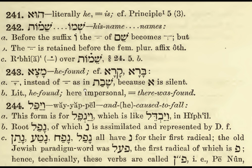Matza — 'he found.' Here we have Ah instead of Ah, as in Shabbat, because the Aleph is silent. Matza literally means 'he found,' but here it's impersonal: 'there was found.' Vayyappel — 'and he caused to fall.' This form stands for Vayyannappel, with an assimilation going on — just like Vayyappel in Hifil. The root is Nafal; the Nun is assimilated and represented by the Dagesh Forte replacing the missing consonant.